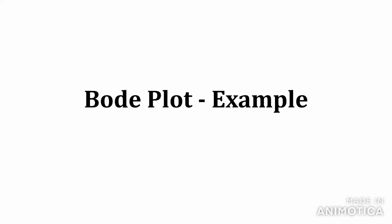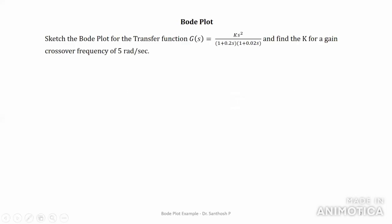Greetings. Now we will see a simple example of a Bode plot — how to develop a Bode plot for a simple problem and also find the gain crossover frequency at a particular gain value. The given problem is: sketch the Bode plot for the transfer function k·s² divided by (1 + 0.2s)(1 + 0.02s), and find the gain k for a gain crossover frequency of 5 radians per second.